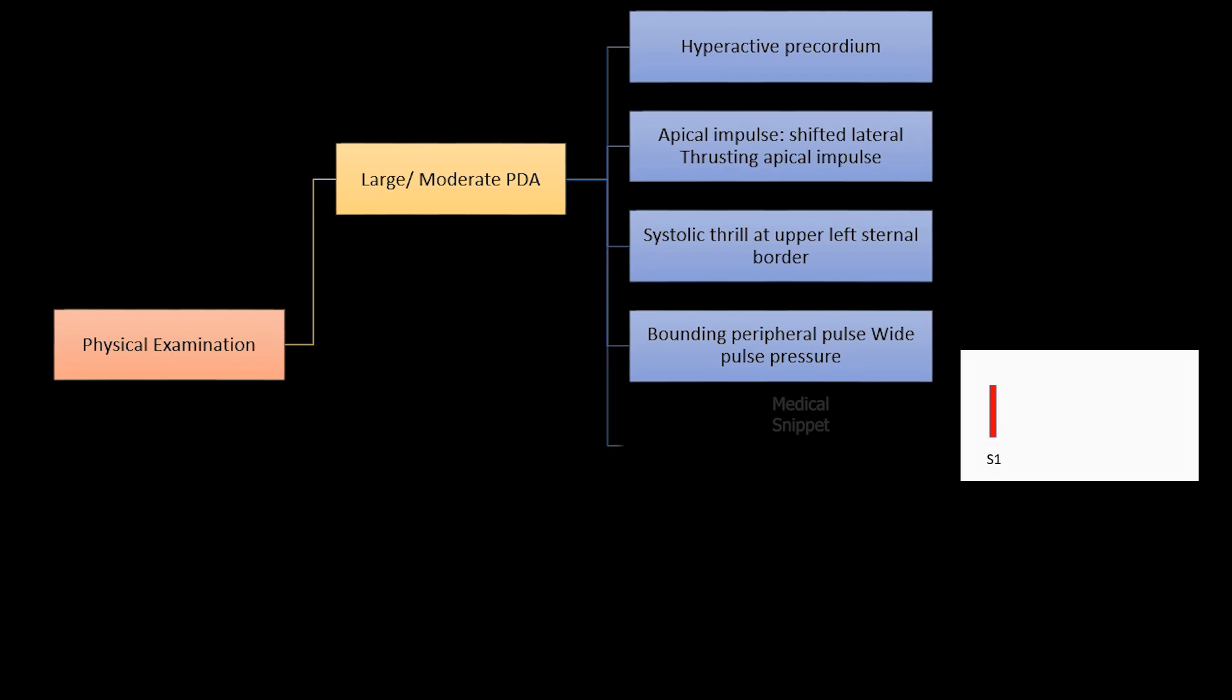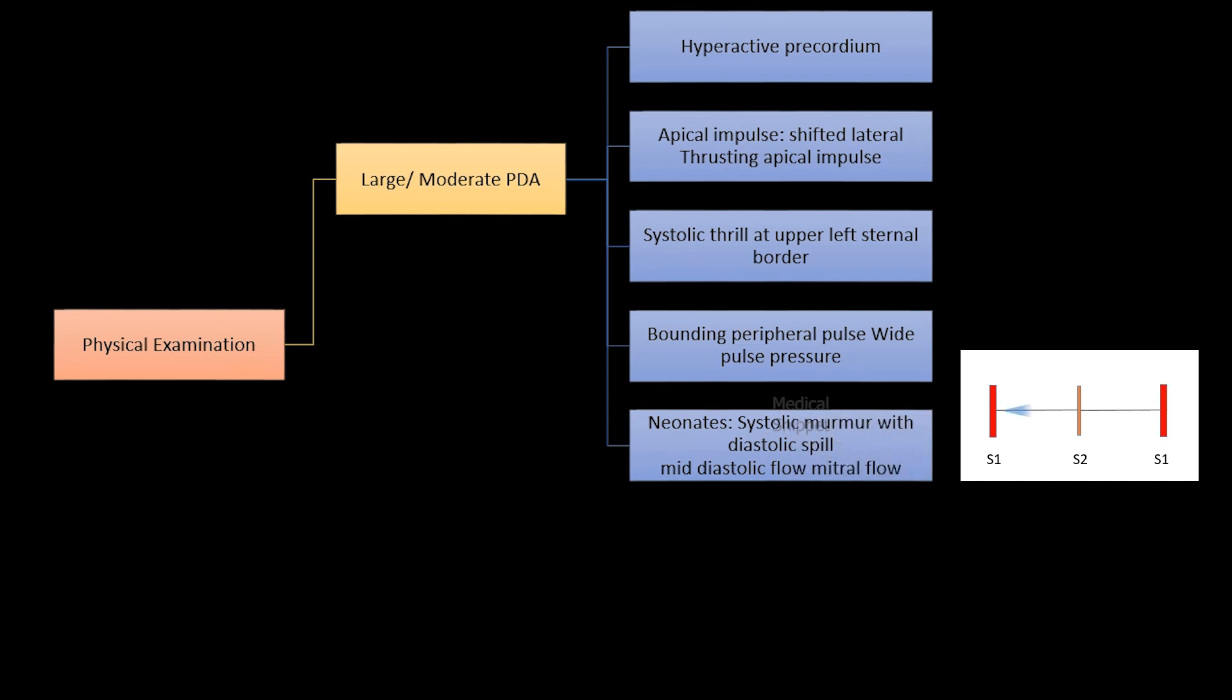In neonates, the murmur is systolic with late systolic accentuation and minimal diastolic spill. There is also a mid-diastolic flow murmur across the mitral valve.